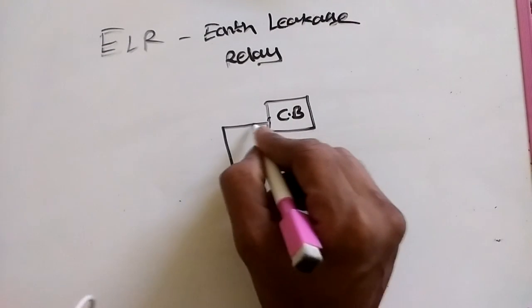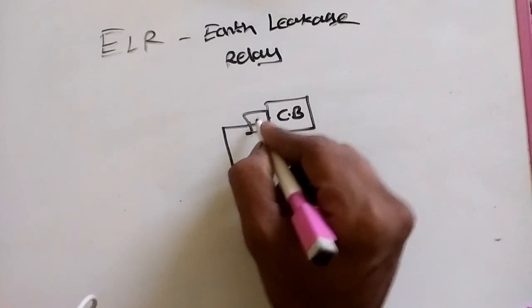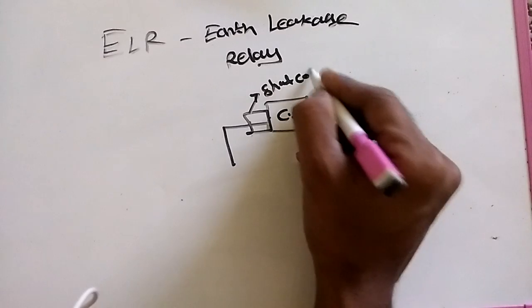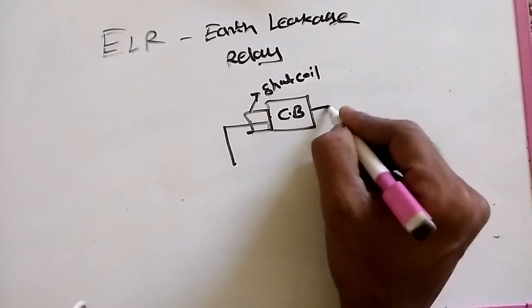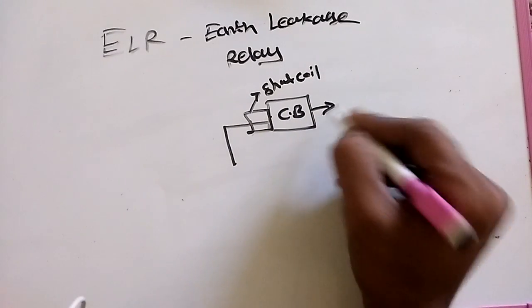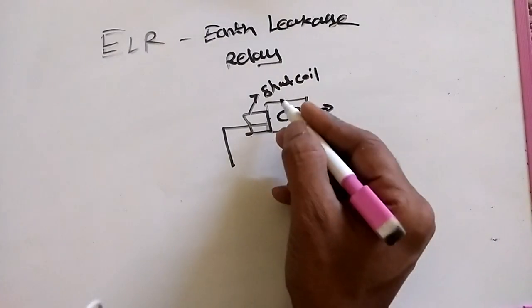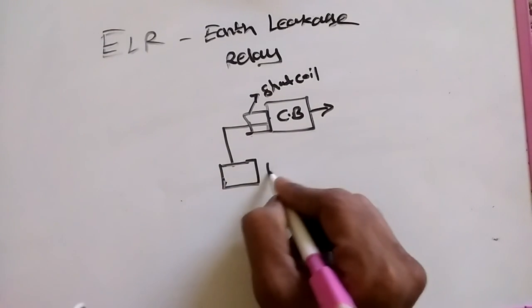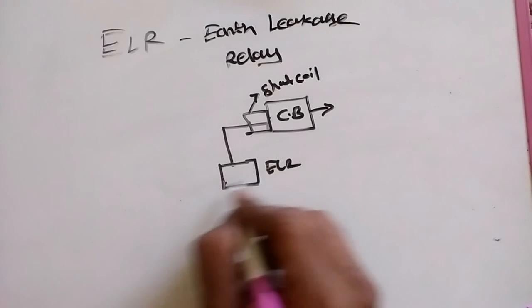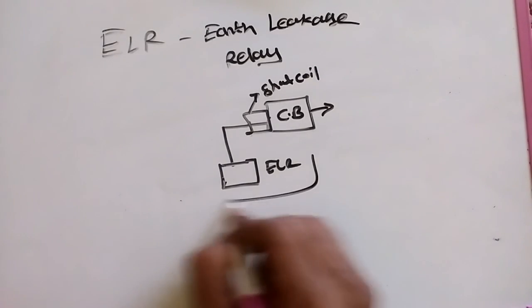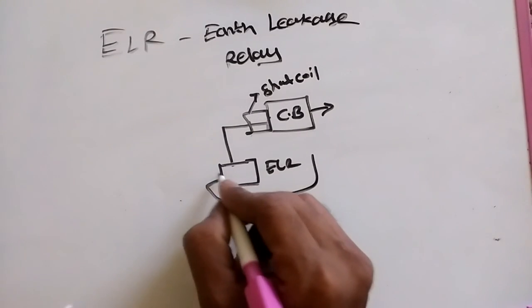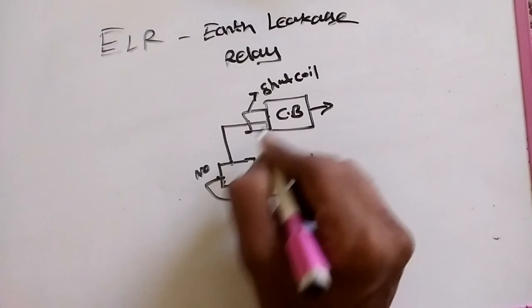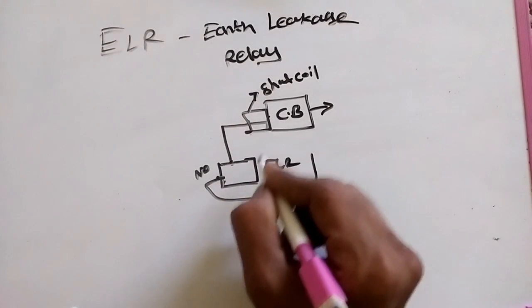The circuit breaker has a shunt trip coil. The shunt trip coil is going to break the ELCB. How does the shunt trip coil get supply from ELR? We are already giving supply to ELR for NO. Another terminal of NO is connected to the shunt trip, and neutral will be directly connected to the shunt trip.